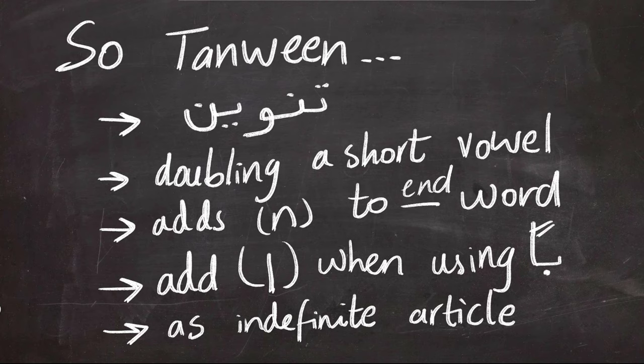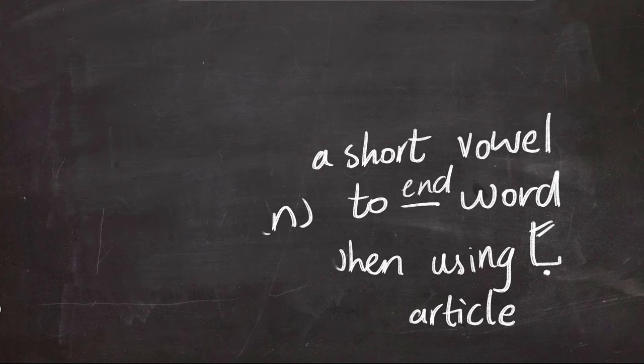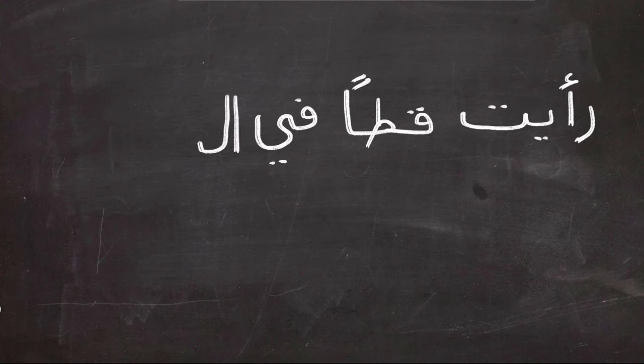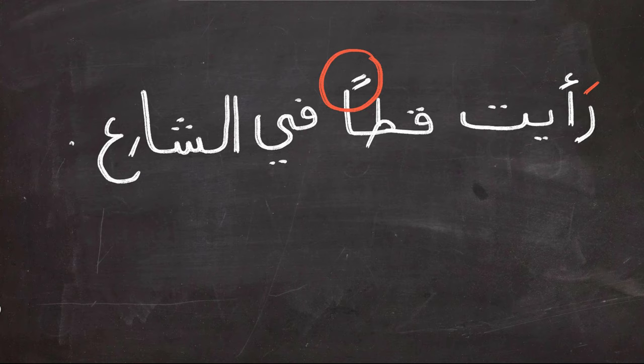The main purpose of Tanween is as an indefinite article, like A and An in English. Let's have an example to conclude this lesson. I'm going to give you a chance to read this sentence on your own before I pronounce it for you. Now I'll add the short vowels here. You should be able to pronounce it on your own. Now the sentence reads,